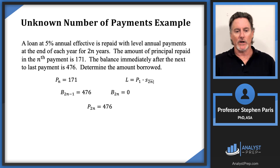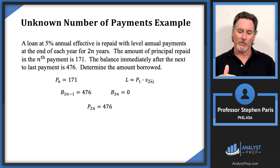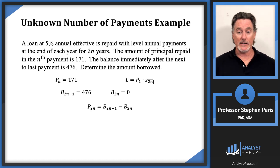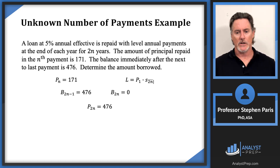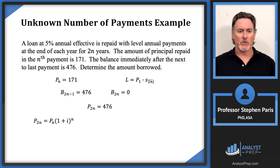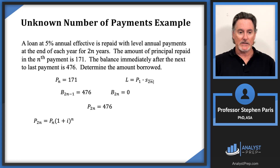You should recognize immediately that when you have neighboring balances, you subtract the later from the earlier to get the principal repaid in that payment. That's how we get P_{2n} = 476. Now I have both P_n = 171 and P_{2n} = 476, and since we have level payments I can relate them: there are n periods between time n and time 2n.